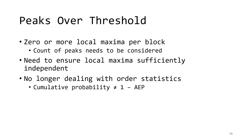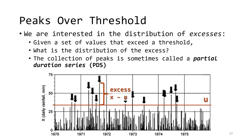One consequence of working in this realm is that we're not working with order statistics anymore, and the cumulative probabilities that we compute are not the complement to the AEP anymore. However, at the end of this discussion, we'll find out how to get back to the annual exceedance probabilities using a peaks over threshold model.